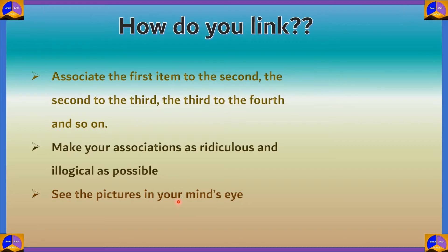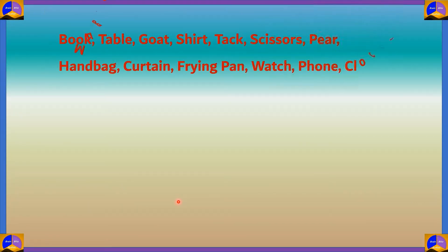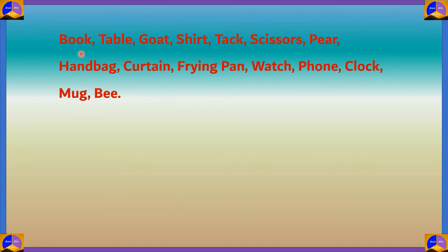Let's simplify these rules by looking back at our test — the list: book, table, goat, shirt, tack, scissors, pear, handbag, curtain, frying pan, watch, phone, clock, mug, and bee. How do you start? The first thing is to remember the first object, which is book. I suggest you remember any particular book you like — for example, if someone likes Harry Potter, you can visualize yourself reading Harry Potter or writing in your personal diary.